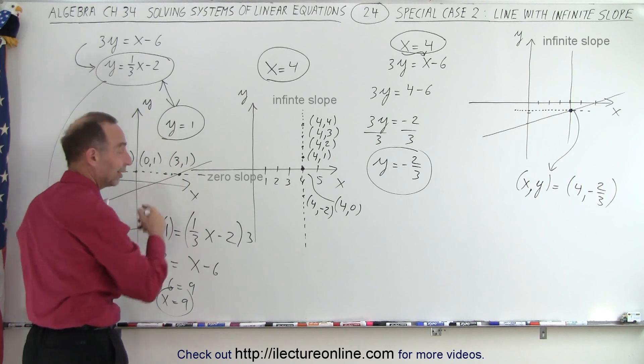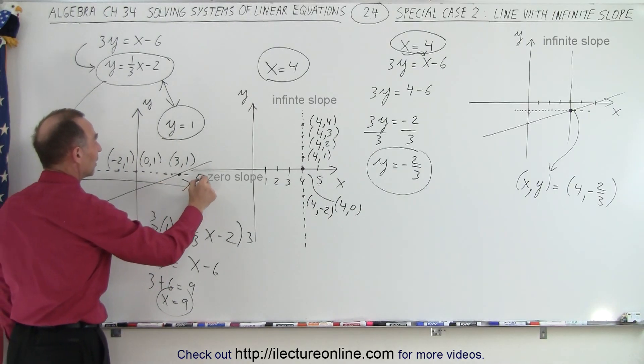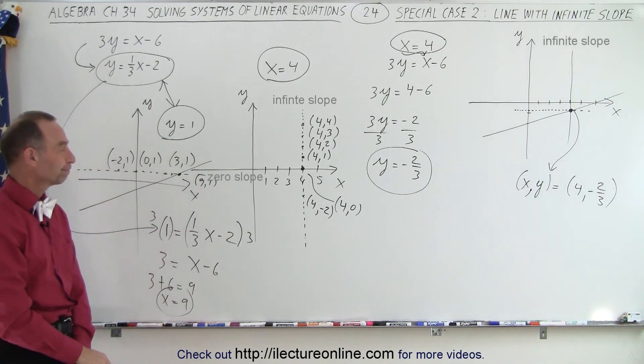So that point would be x, well I didn't quite draw it to scale of course, but that point right here would be the point 9 comma 1. And that's how you would solve for that. That's correct.